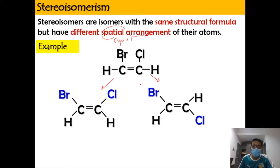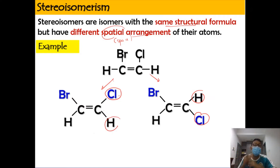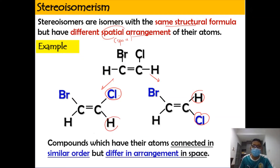Even though they have the same structural formula, the arrangement of chlorine and hydrogen differs between the two structures. In one, chlorine is upwards; in the other, chlorine is downwards. They have the same structural formula but different arrangement in space, because in reality the structure exists in 3D — chlorine can point upwards or downwards on the same carbon.